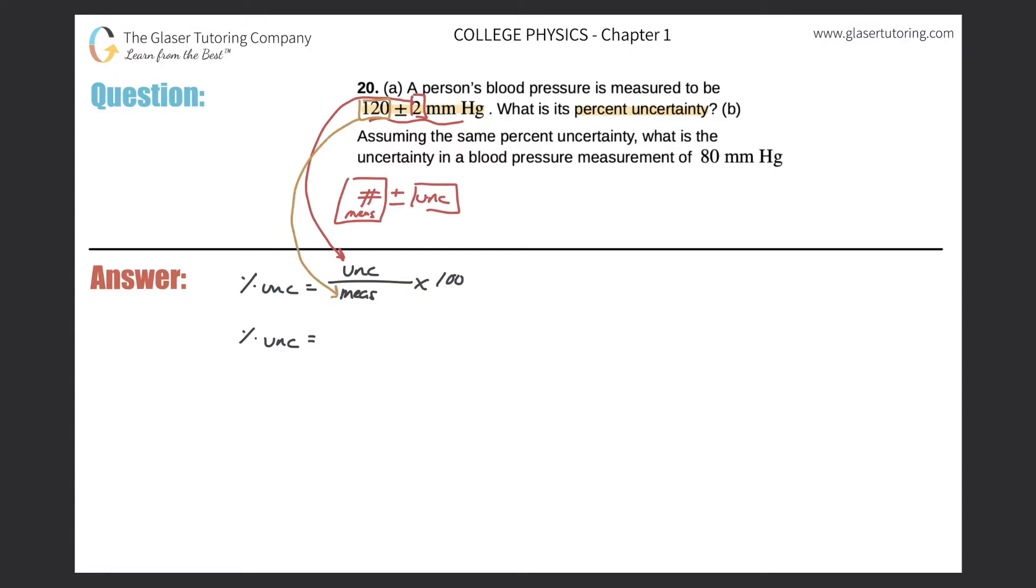So now we have enough information we need to solve this particular question. So we have 2 over 120 multiplied by 100. Now the percent uncertainty, before I calculate that, I got to talk a little bit about sig figs here. It appears that the 120 value only has two significant figures as written. Why? Because there is no decimal present.